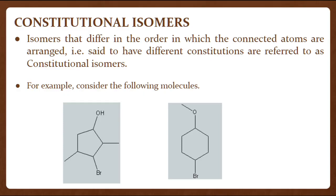To determine whether two molecules are constitutional isomers, we just count the number of each atom in both molecules and see how the atoms are arranged. If both molecules have the same count for all of the different atoms and the atoms are arranged in different ways — that is, their connectivity is different — the molecules will be considered constitutional isomers. Connectivity means how the atoms are attached to one another. For example, an ether has a connectivity of C-O-C and an alcohol has a connectivity of C-O-H. Consider the following molecules — these are constitutional isomers because the connectivity of the atoms is different.